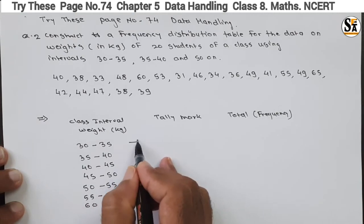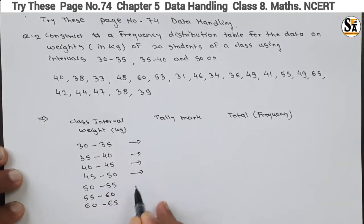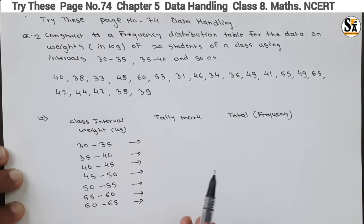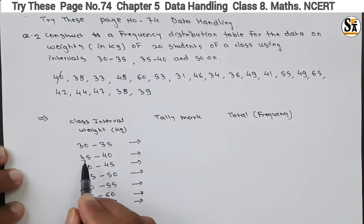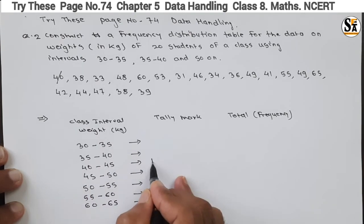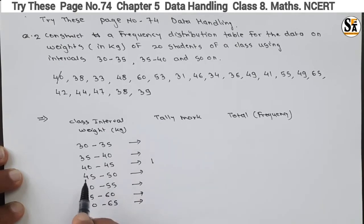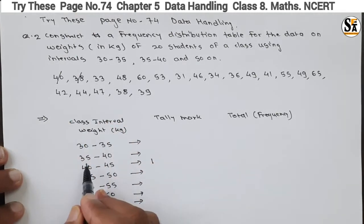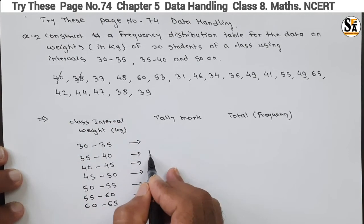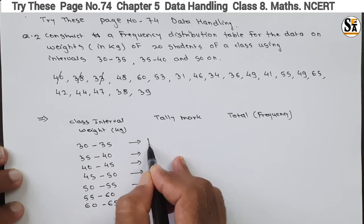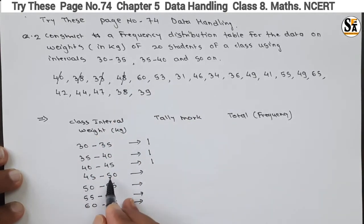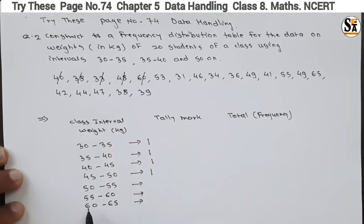Now make the tally mark for each group. Strike each number and make the tally mark. For example, 40 will lie in the group 40 to 45 — make a tally mark there. Always remember: the number always lies in the higher group. Then 38 will lie in 35 to 40, 33 in 30 to 35, 48 in 45 to 50, and 60 in the higher group.